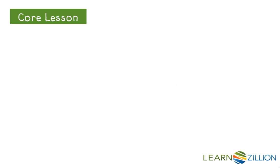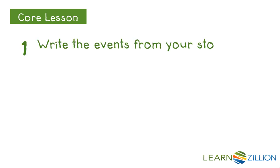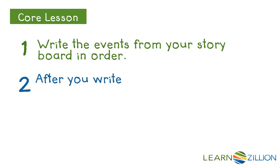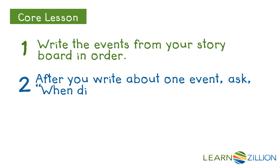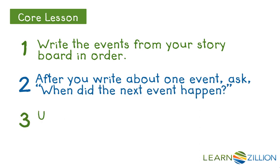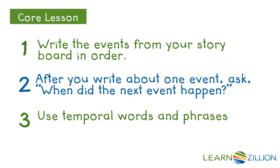We will follow three steps to write our first draft of our narrative reading response. First, we will write the events from our storyboard in order. Second, after writing about one event, we'll ask ourselves, when did the next event happen? Third, we'll use temporal words and phrases to connect each event.